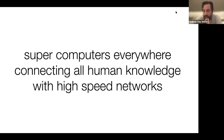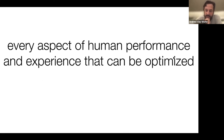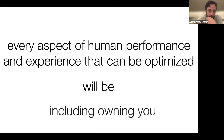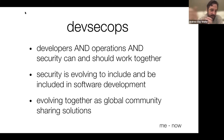We've collectively built a world of supercomputers everywhere, connecting all human knowledge to high-speed networks — but also to adversaries. Every aspect of human performance and experience can be optimized, and that includes owning you. This is an arms race. All these roles can work together: the DevSec part needs to develop these things, but also connect them to operations and the rest of these selfish interests. There are lessons you don't have to learn the hard way because we can participate in global communities and reuse what other people have learned.